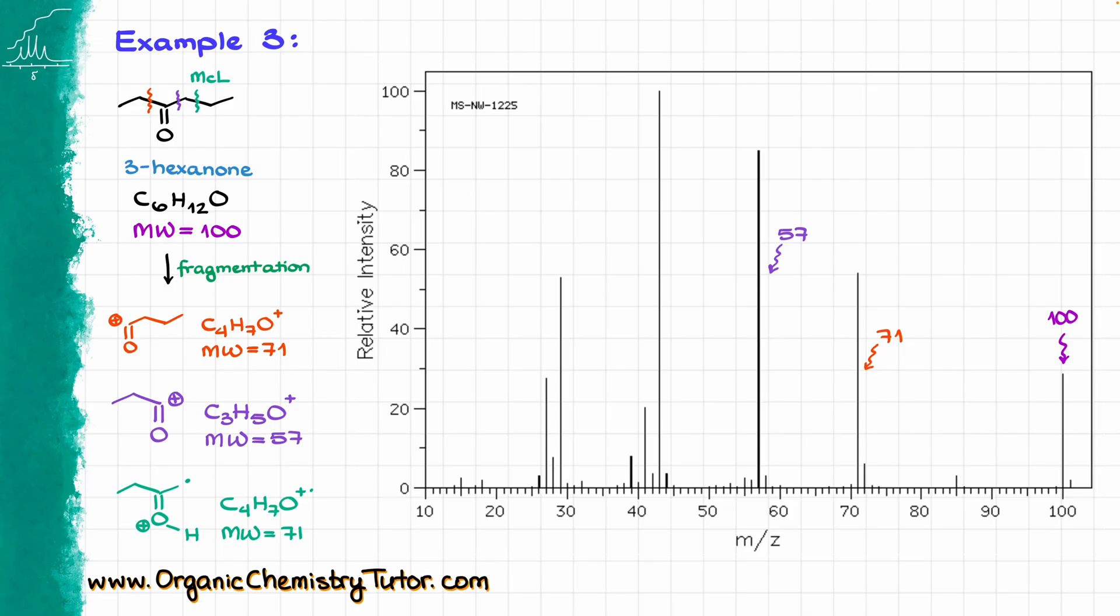We also do have this huge peak over here at 43, and if you are curious, that one is actually a propyl carbocation, which we are going to have when we take this orange carbocation that we have over here, and we'll lose CO from that, so that one is going to give us the carbocation at 43. But, as I've mentioned, usually we don't look at those smaller pieces.